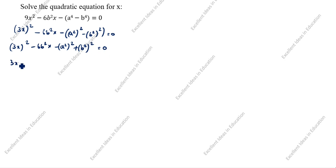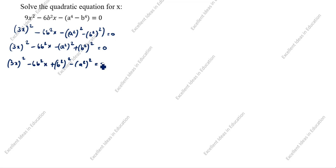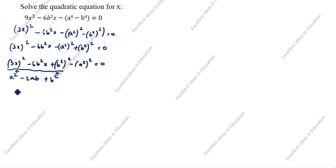Next step: (3x)² minus 6b²x. Now we bring plus b⁴ here — plus (b²)² minus (a²)² is equal to 0. Now we will look at this. What is this formula? This is a² minus 2ab plus b², which is the (a minus b)² formula. You see here a² and b².